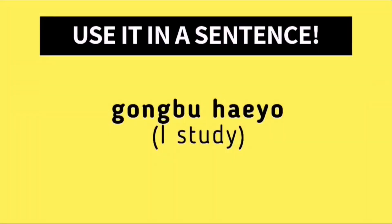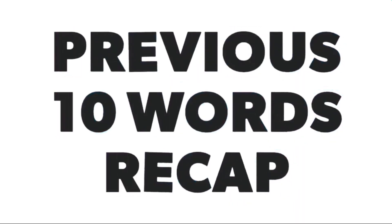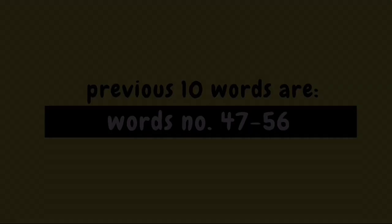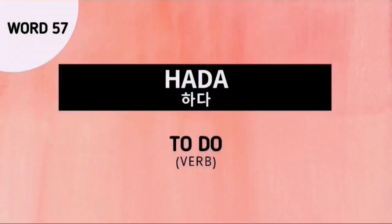Looking back at the example, Kongpu Heo means I study, pertaining to the present action of studying. And with that, you've just learned Hada. Don't forget our word for today: word number 57, Hada, which means to do. Now let's proceed to our previous 10 words recap. Our previous 10 words are words number 47 to 56.